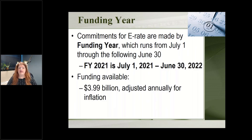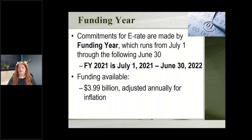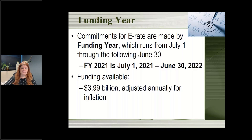The E-Rate funding runs on a funding year. Whenever you are applying for E-Rate, you are looking to the future. Right now you are able to apply for funding year 2021, which starts next year. Funding years always run from July 1st through June 30th of the next year. This is not a program where you can buy something and then after the fact ask for a discount — you've got to think to the future. Things you've already paid for cannot be done with E-Rate.